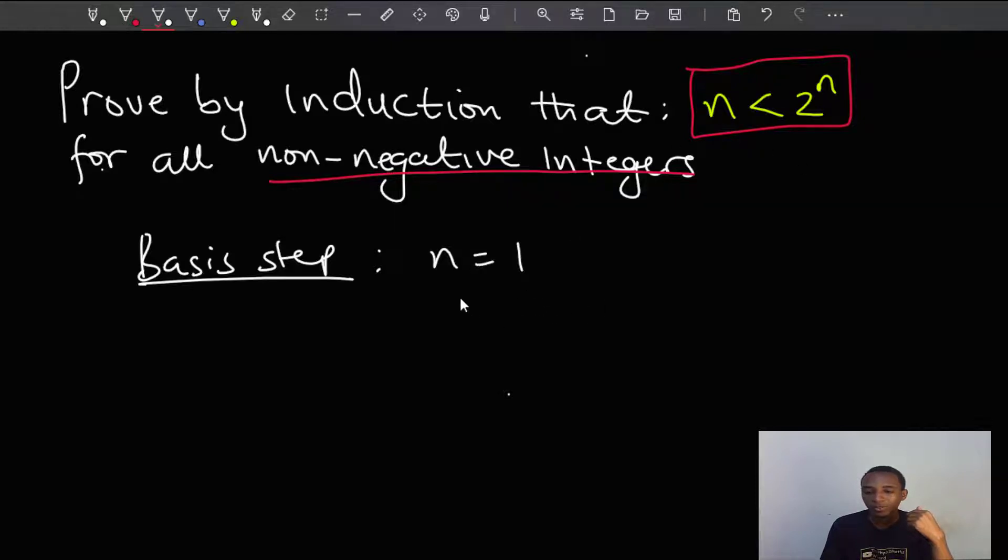So if I just plug n equals to 1, you'll have 1 less than 2 to the power 1, and of course this is true because we know 1 is less than 2.